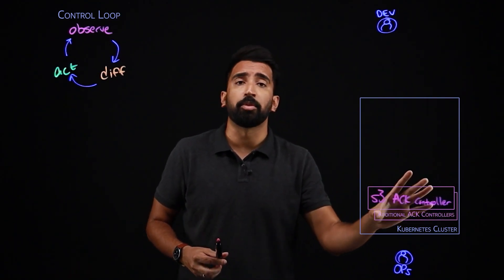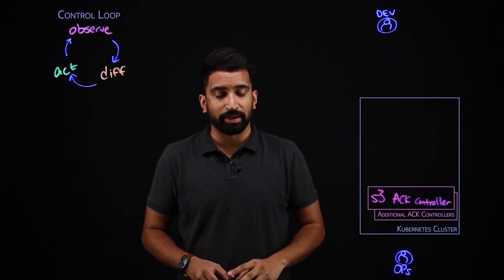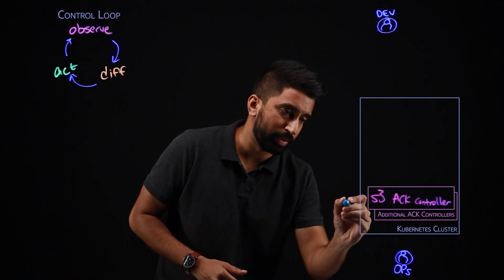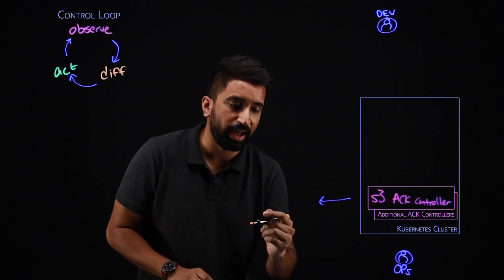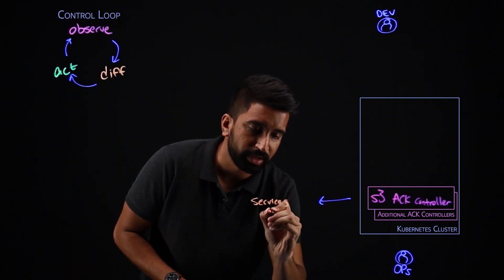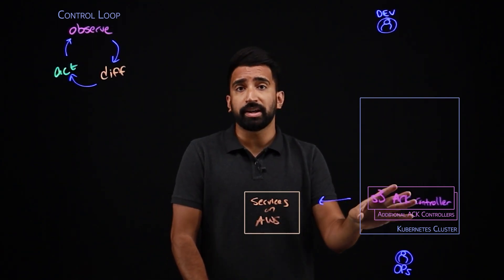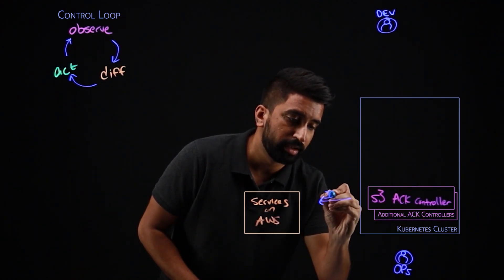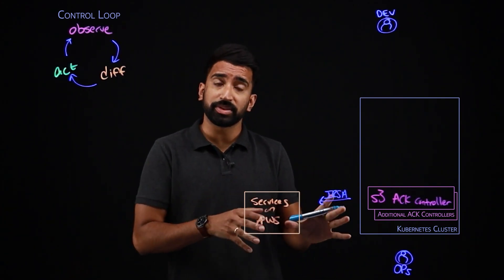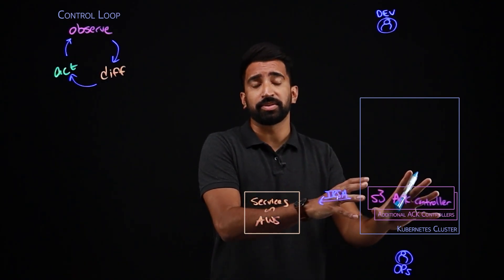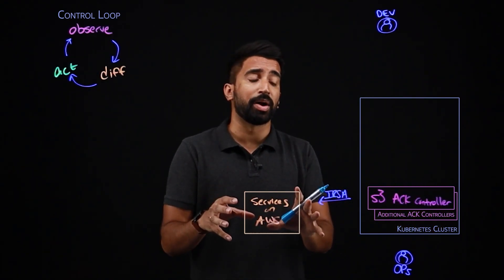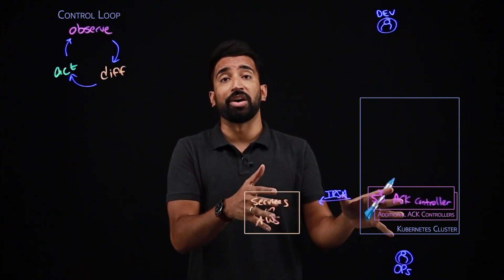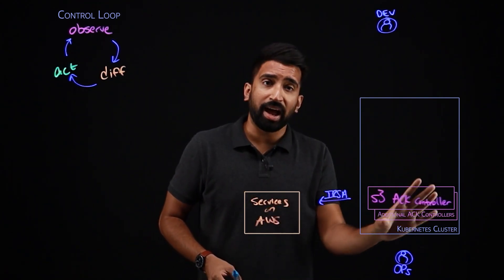How does the controller authenticate with AWS? For the Kubernetes cluster to authenticate and create those services, it uses something called IRSA — IAM Roles for Service Accounts. Essentially, these are Kubernetes service accounts tied to IAM roles in AWS, allowing Kubernetes to securely authenticate and create services on AWS. That's one half of the puzzle — so far no services have actually been deployed.